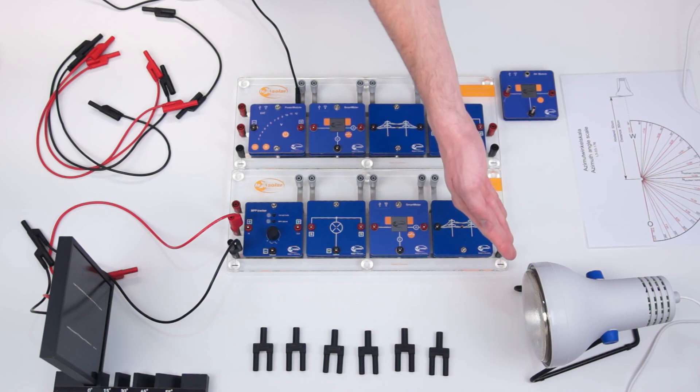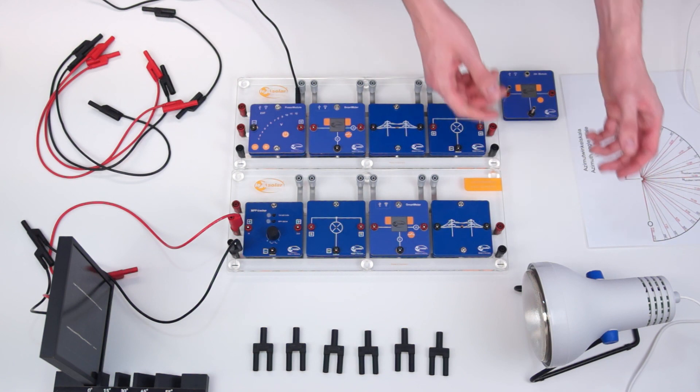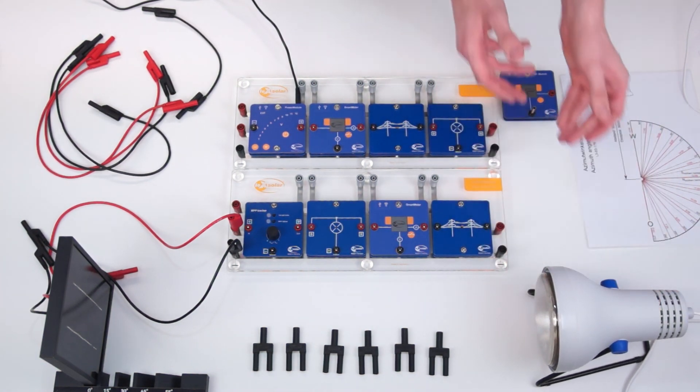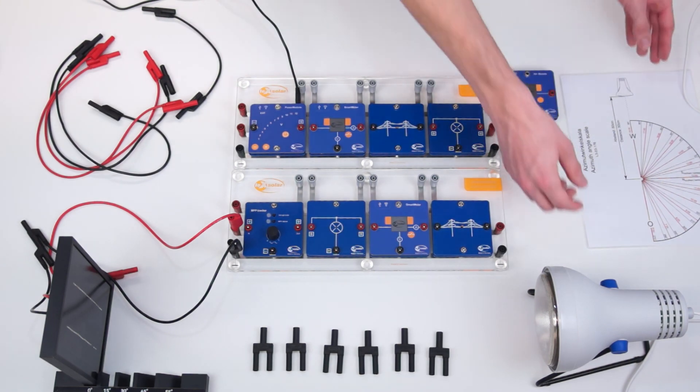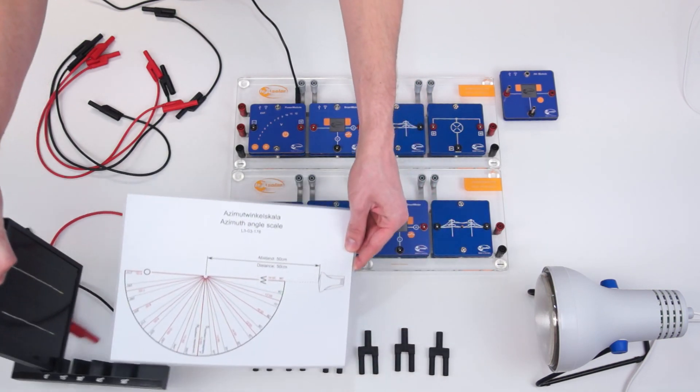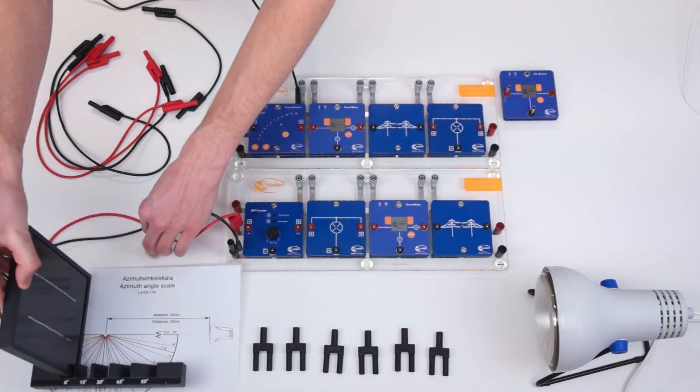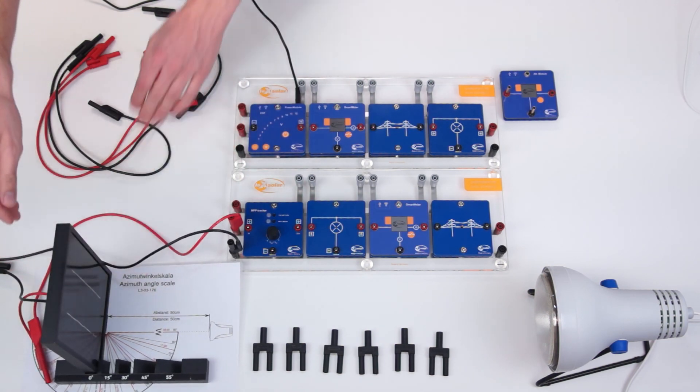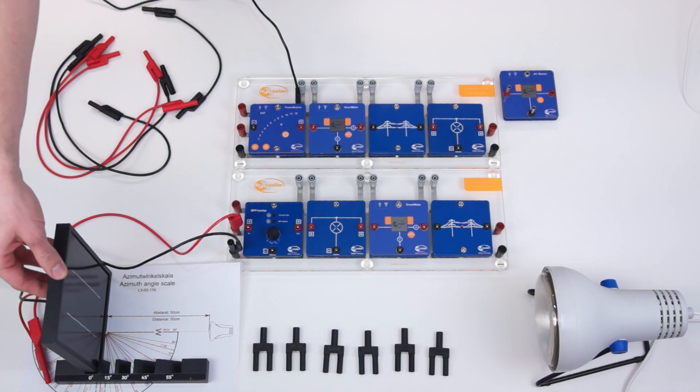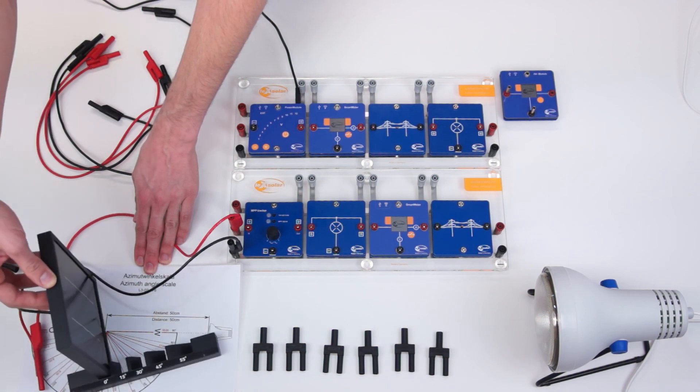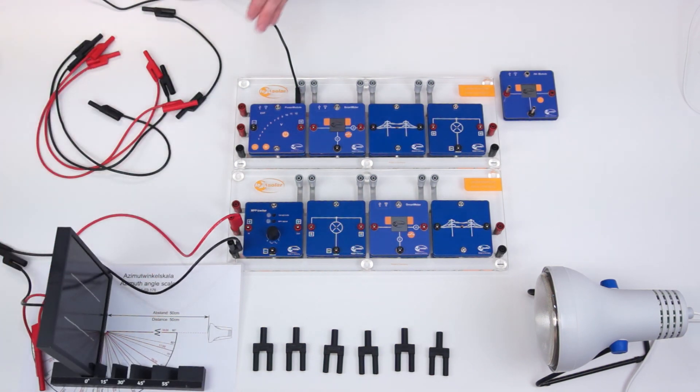In order to regulate the illumination of the solar module, we will use the lamp. This is situated at a distance of 50 centimeters from the solar module with a horizontal beam path. To represent different positions of the sun, we lie the azimuth angle scale under the solar module. It allows us to set the fixed angle of incidence and thereby simulate certain times.